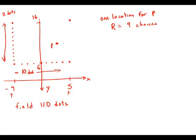And then Q would have to be perpendicular. Q would have to be going up and down. So Q could be any one of the other 10 dots in that column. So there are 10 choices for Q. And so that means any one location for P, we have 90 choices for a possible triangle.